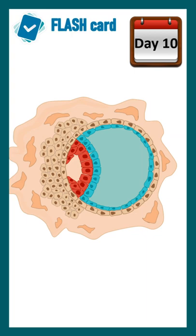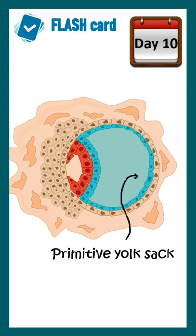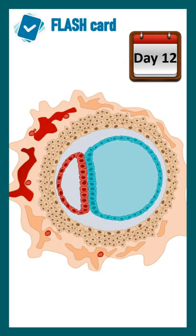At day 10, you can find a primitive yolk sac which is forming. At this time, lacunar networks also start to form.